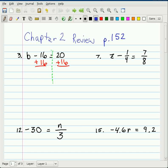And as you know, these 16s cancel out. So on the left, I'm left with b, and on the right, I do 20 plus 16, and I get 36. And that's the solution to that problem.